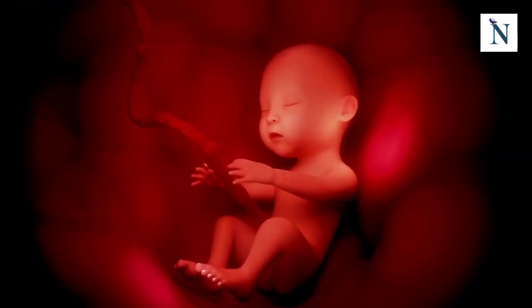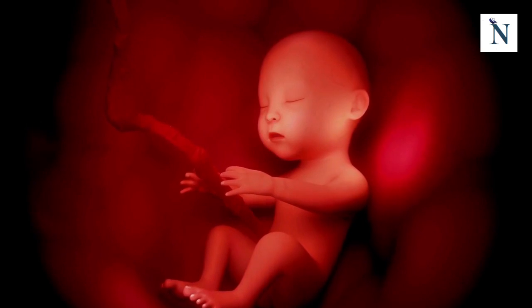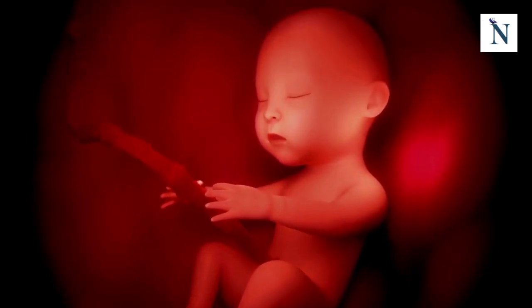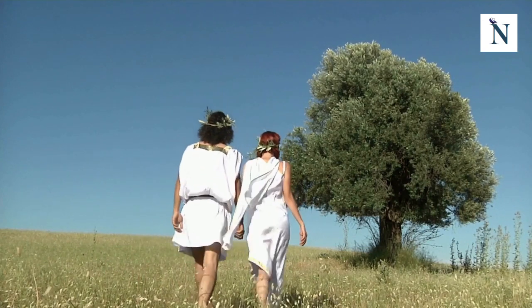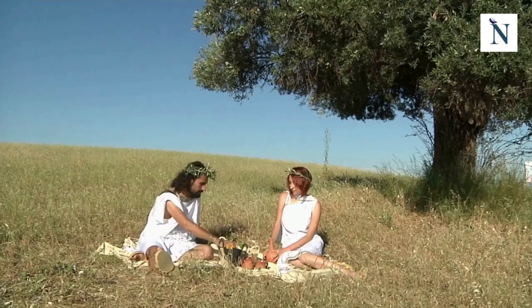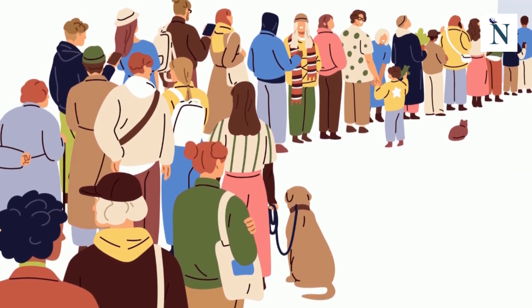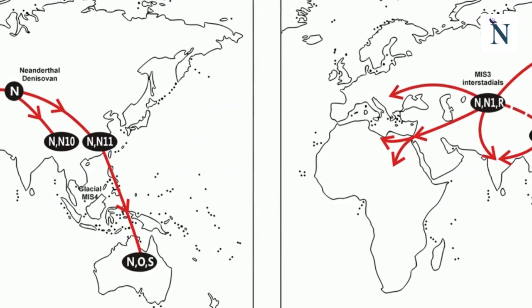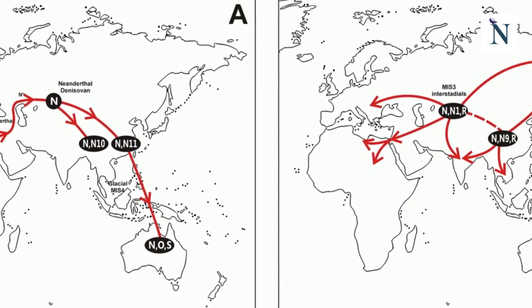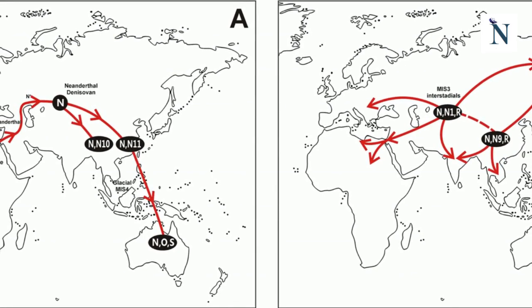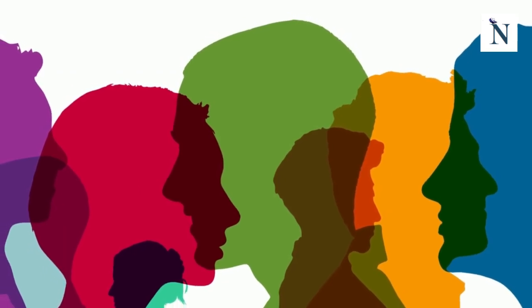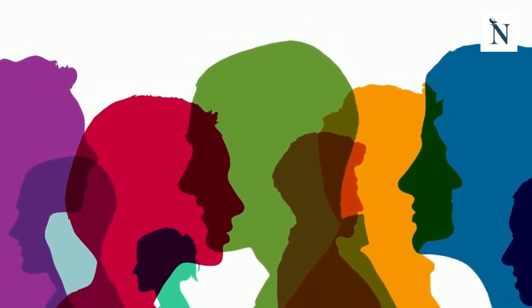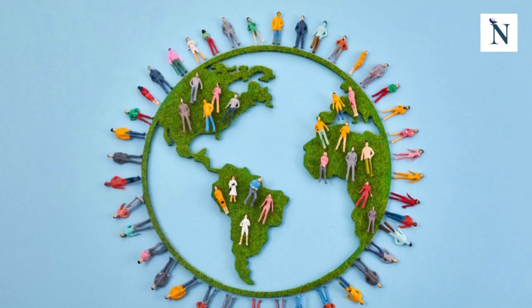Over time, mutations contribute to the evolution of human populations by introducing new genetic variants. The process of migration has played a crucial role in shaping the genetic diversity of human populations. Human history is marked by waves of migration and colonization, and these movements of people have led to the mixing of different genetic backgrounds. For instance, the out-of-Africa migration is a well-documented event in our evolutionary history, involving the dispersal of Homo sapiens from Africa to populate other parts of the world, leading to the emergence of different population groups with distinct genetic markers.